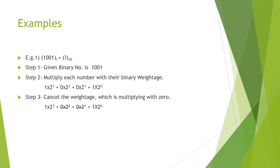Now we cancel the weightages multiplied by 0 — we have already cancelled those. We add the remaining values: 2 raised to 0 times 1 equals 1, and 2 raised to 3 is 8. So 8 plus 1 equals 9. This binary number 1001 is nothing but the number 9 in the decimal number system. This is how we convert a binary number into its corresponding decimal.